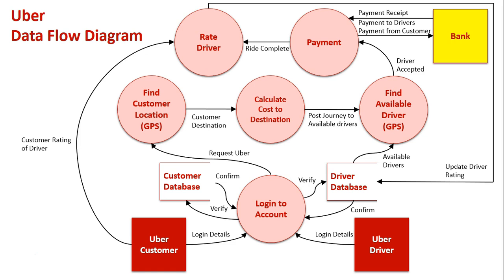I hope this video has given you a better understanding of how Uber works and how it can be displayed in both context and data flow diagrams. It's quite an interesting system where customers and drivers work together through a system, yet technically both are external entities — neither is part of the actual Uber organization. Both interact through and benefit from the system, with a big focus on customer service through the rating system. Uber drivers want to be the best they can be in order to get the most out of this system.